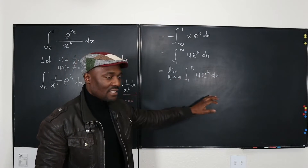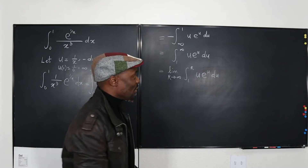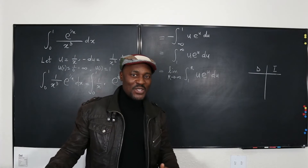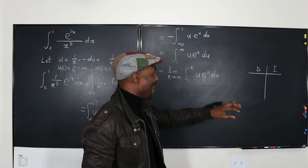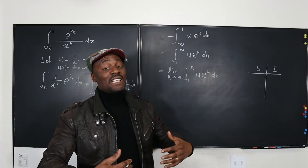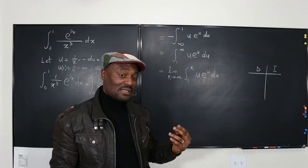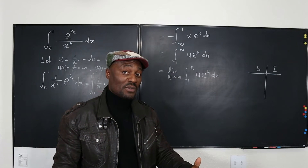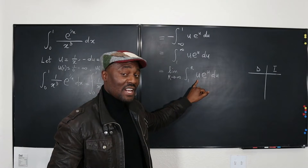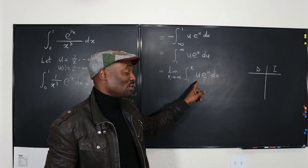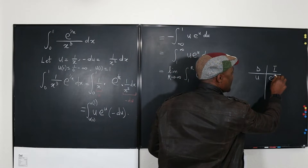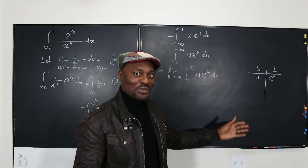I'm going to use the DI method, which is integration by parts. I set up two columns: D for differentiate and I for integrate. I need to decide which term to differentiate. If I differentiate u, I get 1; differentiate again, I get 0 — so there's hope of reaching zero. That's what I must choose to differentiate. The other term, e to the u, I will integrate. I alternate plus and minus signs going down.